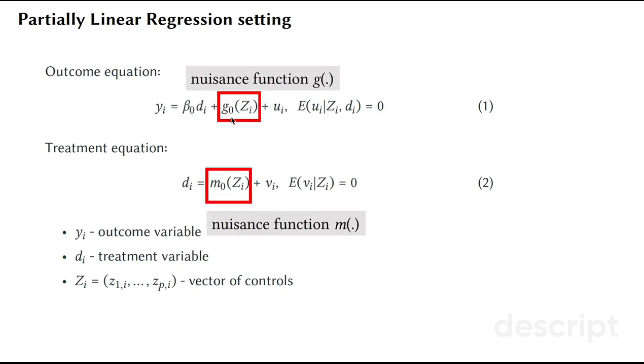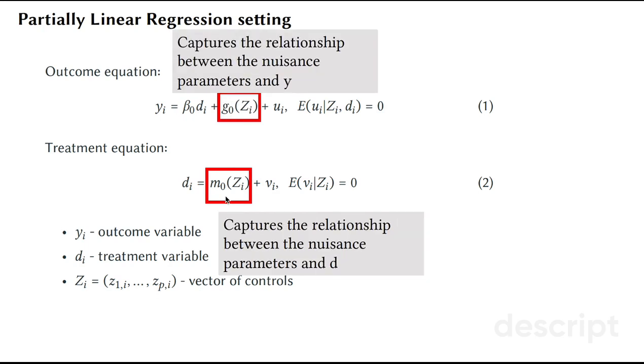We call the functions g0 and m0 as nuisance functions. Why? Because they capture the relationship between the nuisance parameters and the outcome or the treatment.